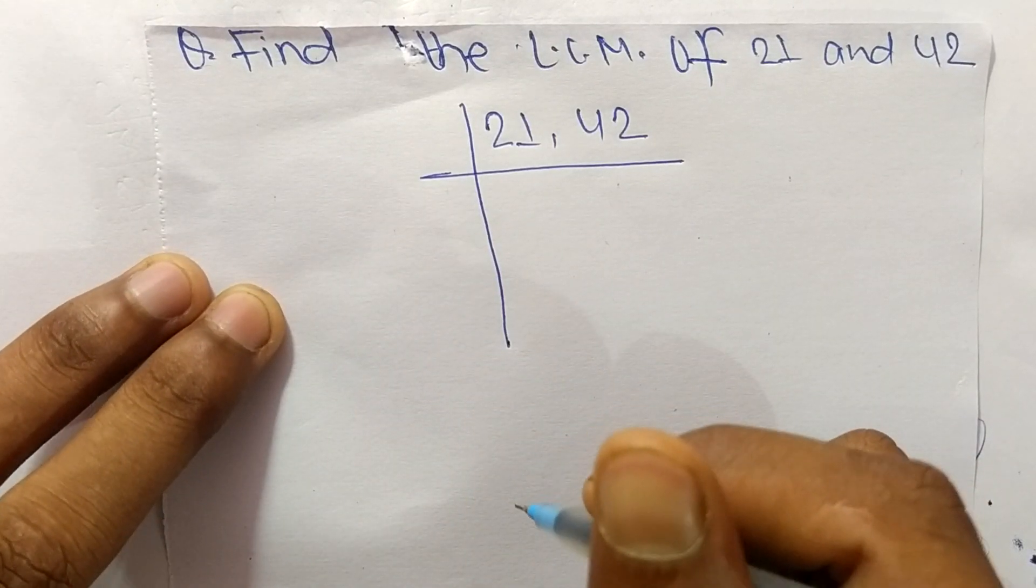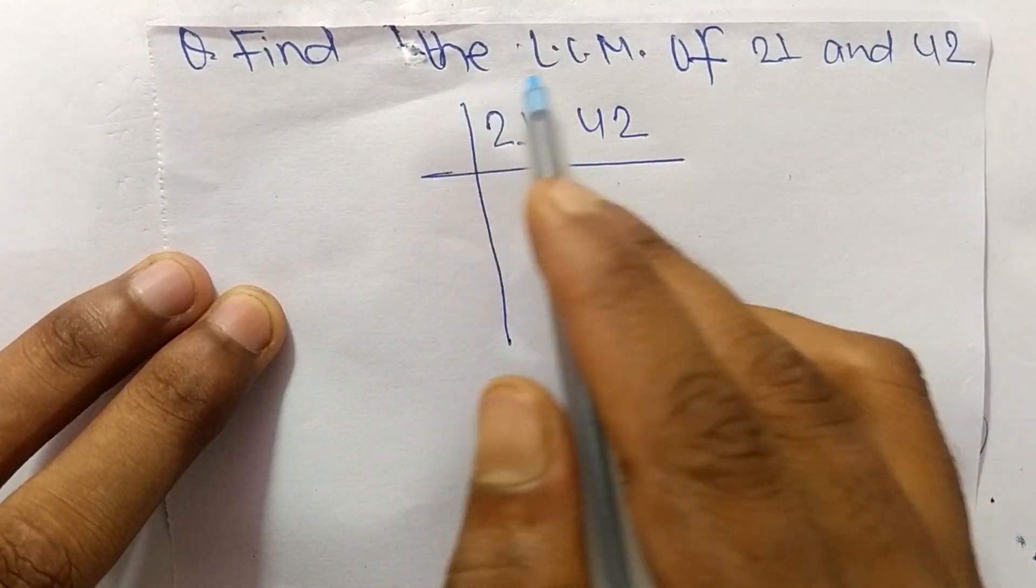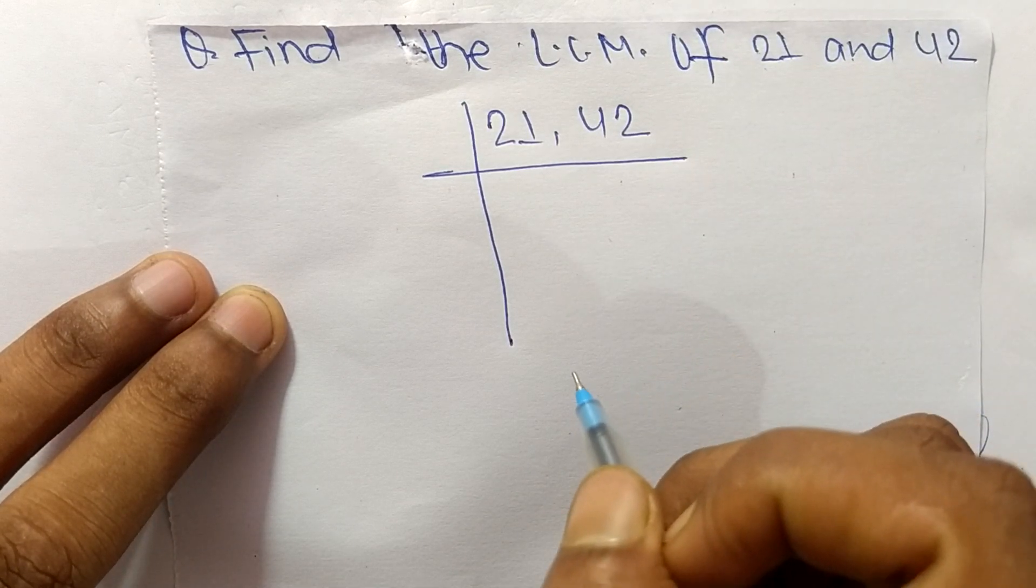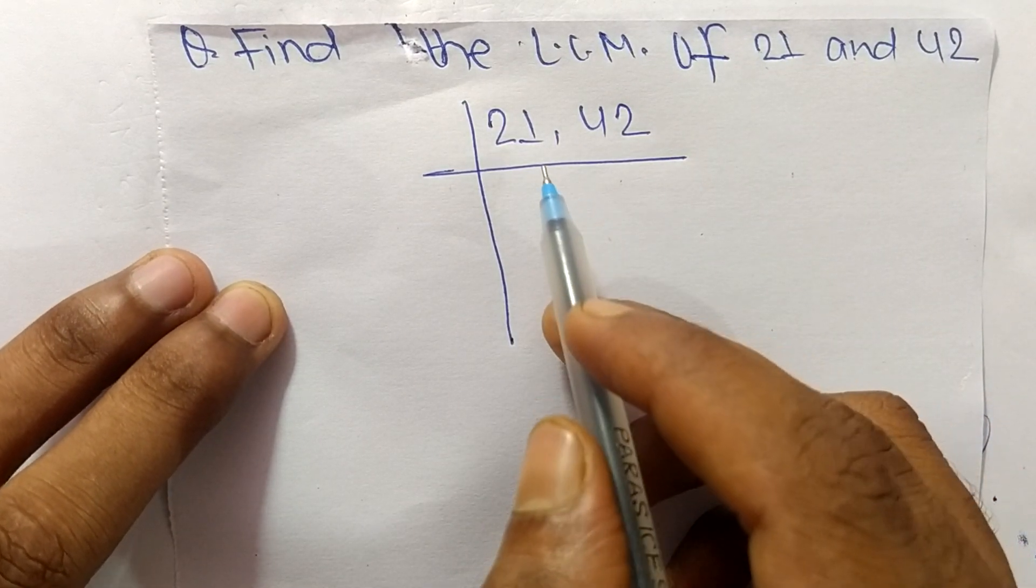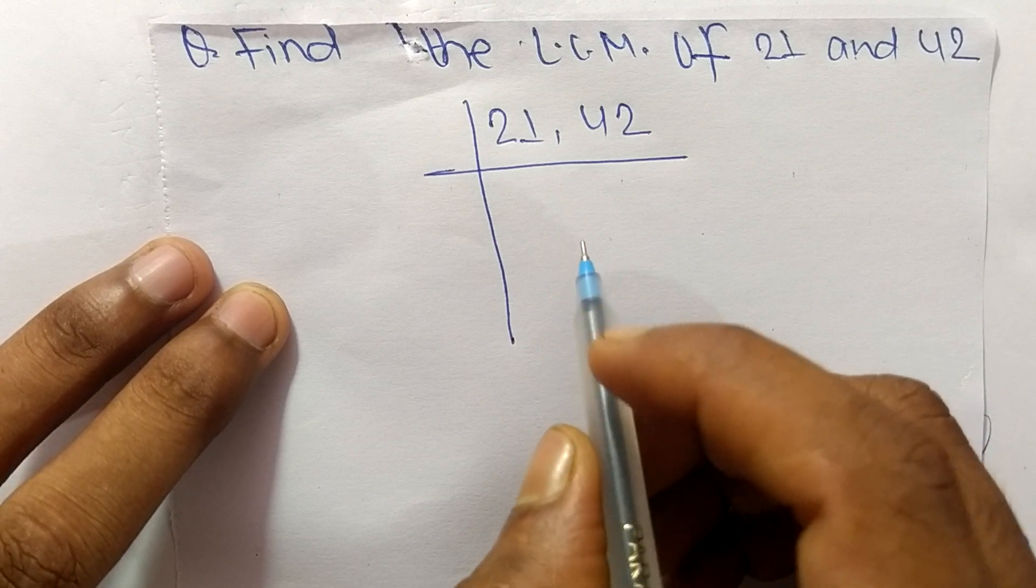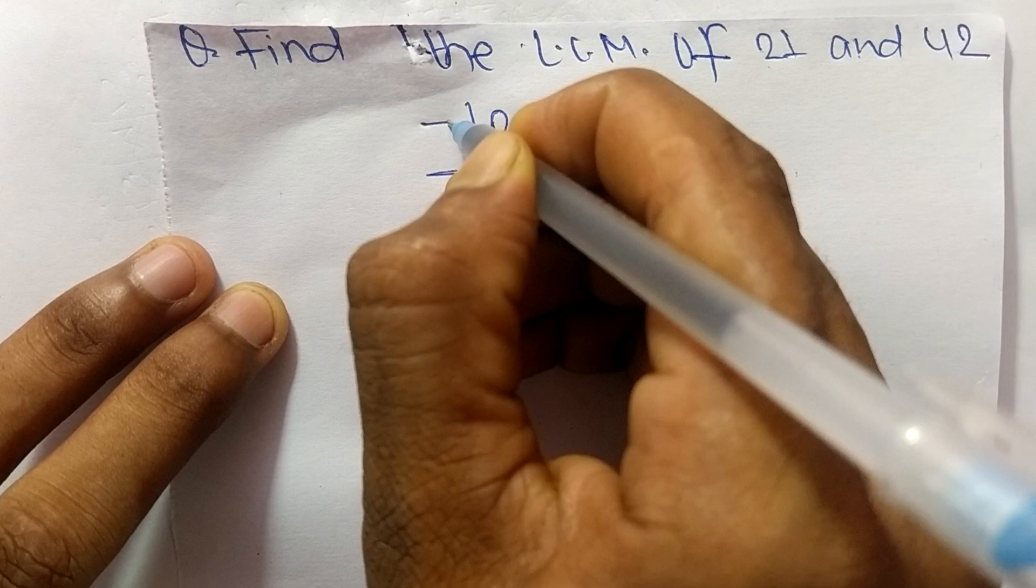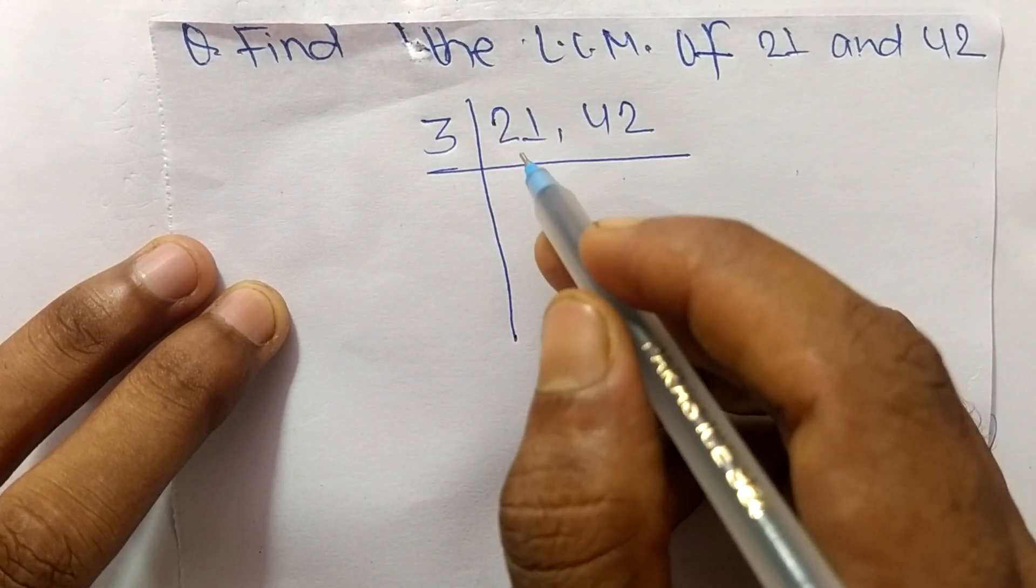Today in this video we shall learn to find the LCM of 21 and 42. To find LCM, we choose the lowest number that can exactly divide 21 and 42. So the number is 3.